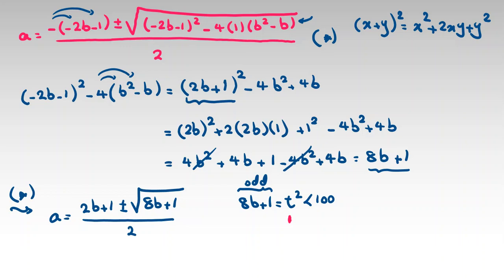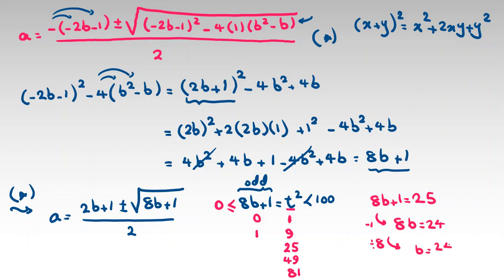B cannot be negative because T squared must be at least 0, so B is at least 0. The possible odd perfect squares are: T squared equals 1 giving B equals 0; T squared equals 9 giving B equals 1; T squared equals 25 giving 8B equals 24 so B equals 3; T squared equals 49 giving 8B equals 48 so B equals 6; T squared equals 81 giving 8B equals 80 so B equals 10. So we have five cases.